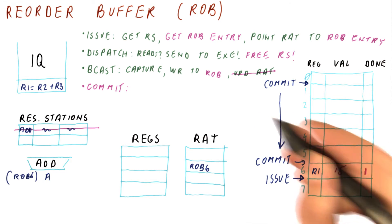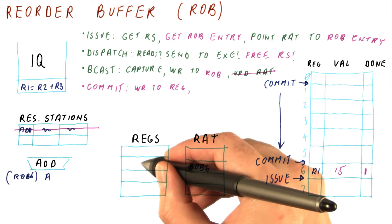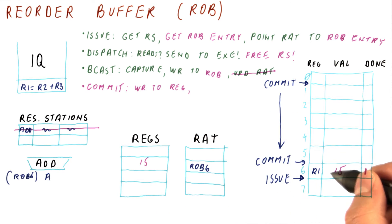The committing of the instruction consists of actually taking this value, 15, and writing it to the register that the instruction is supposed to write to. In this case, r1, so 15 will be written here.